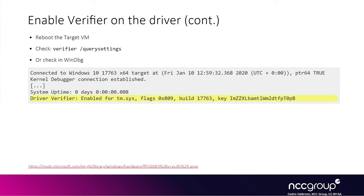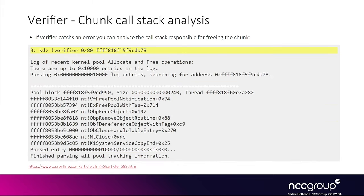Then you need to reboot the target VM where Verifier is now enabled. After it has rebooted, you can confirm that Verifier is enabled on the tm.sys driver either using 'verifier /query settings' or directly in WinDbg, because the output will show a specific line mentioning the Verifier. When you try to trigger and win the race condition and you want to see the use-after-free, you can use the '!verifier' command and specify the 0x80 hex flag and the pool address you want information for. This will dump information about when this address was allocated and freed by the tm.sys driver, giving you a call stack of the operation.